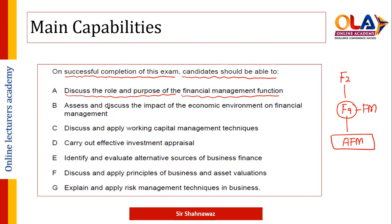Second learning outcome is to assist and discuss the impact of the economic environment on the financial management function. This A and B part of the syllabus is mostly the theoretical part, tested through MCQs and part questions.